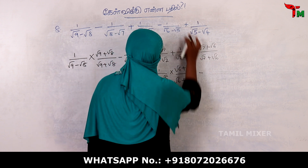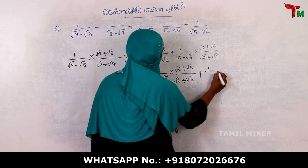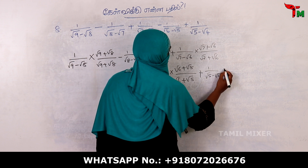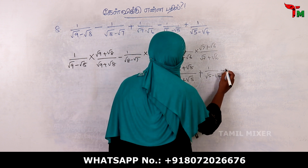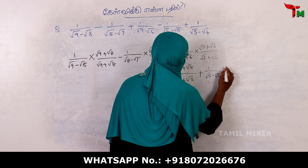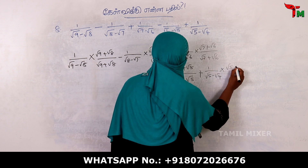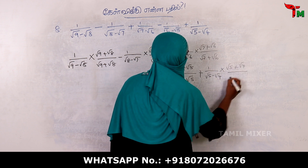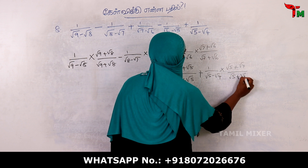Now we will add: 1 by root 5 minus root 4, multiplied by root 5 plus root 4, divided by root 5 plus root 4.